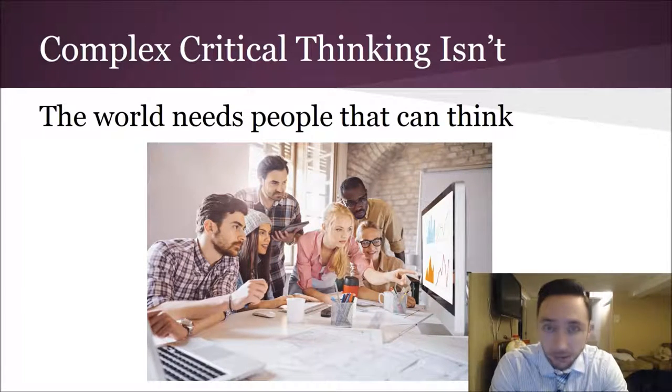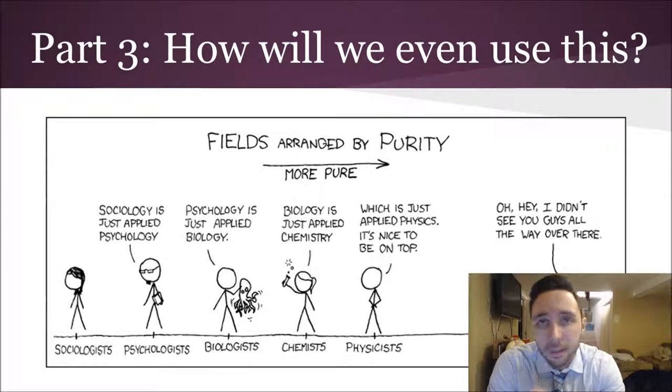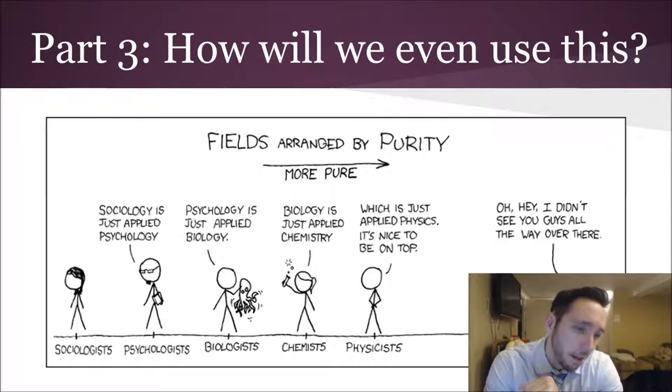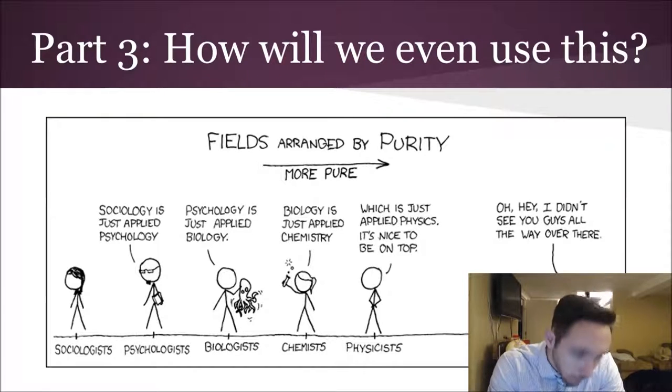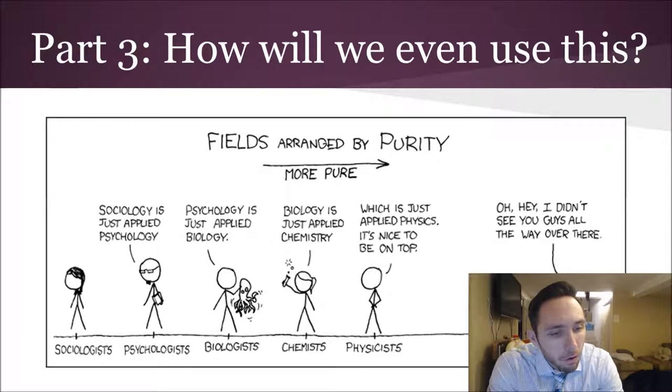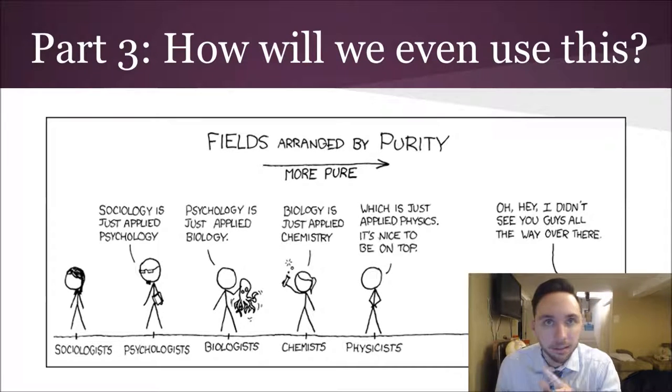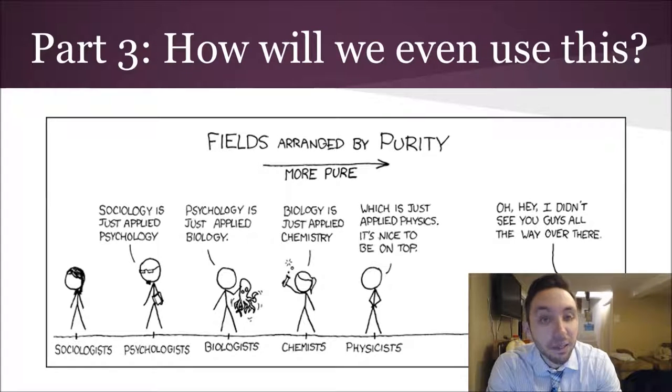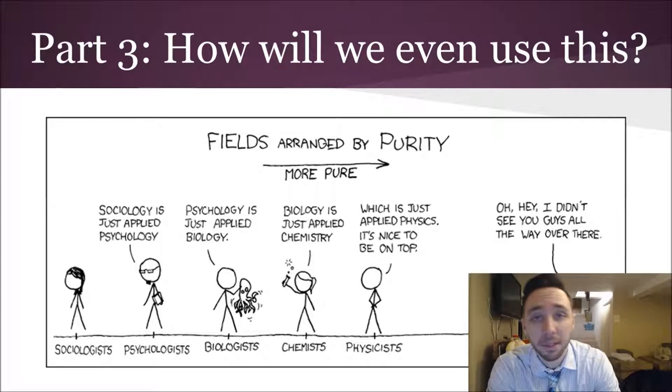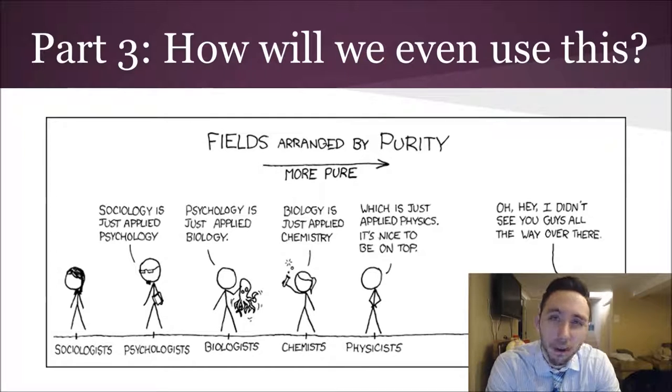So part three, the last part of this three-part series: how will we even use this? As you can see here there's another xkcd comic, it's fields arranged by purity. So on the far left corner we see the sociologists, and next to that person is the psychologist who's just kind of scoffing and saying sociology is just applied psychology. And if you keep going the biologist says that about the psychologist, the chemist says that about the biologist, and the physicist says that about the chemist. And all the way to the most purest corner we see the mathematician saying oh hey guys I didn't see you all the way over there. Mathematics is the purest of them all. It is almost just foundational knowledge itself, kind of like the cousin of philosophy I guess in some ways. Math is to prove fact beyond all reasonable doubt which is just a fascinating notion if you think about it.